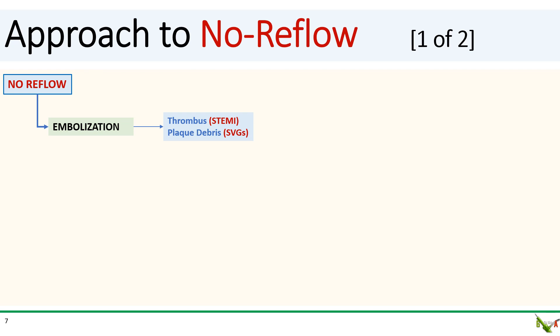When you have a no reflow situation, the first thing to do is to try to figure out the cause. In a STEMI situation, the most common cause is embolization caused by disrupted thrombus embolizing downstream and clogging the arterioles and smaller vessels. A similar phenomenon can happen in PCI of diseased saphenous vein grafts or in atherectomy cases where debris can embolize and clog up the downstream vessels.